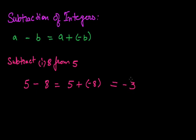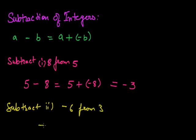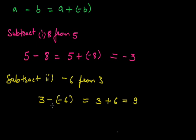3 will have the sign of the greater integer, that is of 8. Now, if I have to subtract minus 6 from 3, it will be equal to 3 minus minus 6. If I open this bracket, then minus and minus will become plus. So it will be 3 plus 6, which will be equal to 9. The main important step is that minus and minus will become plus, since the additive inverse of minus 6 is plus 6.